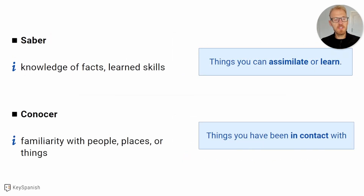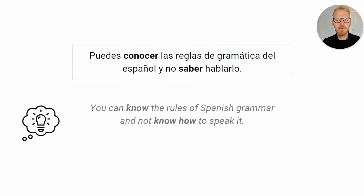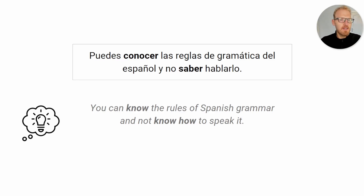A good way of thinking about this distinction is to think of 'saber' as things you can assimilate or learn, while 'conocer' is things you have been in contact with. For example, '¿Puedes conocer las reglas de gramática del español y no saber hablarlo?' — unfortunately, and that's the experience of many students, you can know the rules of Spanish grammar and not know how to speak it. You can have been in touch with the grammar somehow but not have assimilated or learned it. I have to say there is quite a bit more to the distinction between 'saber' and 'conocer,' and that's why I made a full lesson on that topic if you want to check it out.